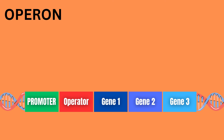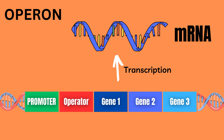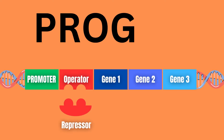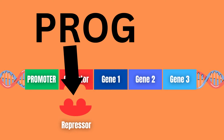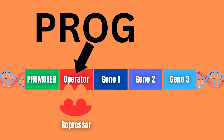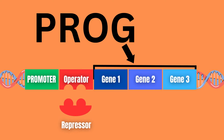An operon is a group of genes that transcribe a single mRNA. The structure of an operon can be remembered using the acronym PROG, which stands for promoter, repressor, operator, and the genes. At the very end of this structure there is a termination sequence which terminates transcription.